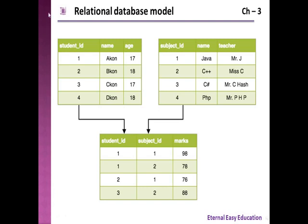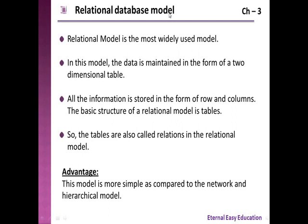Here you can see three tables: one is student ID, name, age; another is subject ID, name, teacher; and the student ID and subject ID are linked with an enrollment table containing student ID, subject ID, and marks. This type of linking relationship is said to be the relational database model. It is the most widely used model. In this model, data is maintained in the form of a two-dimensional table, with all information stored in the form of rows and columns. The tables are also called relations in the relational model.